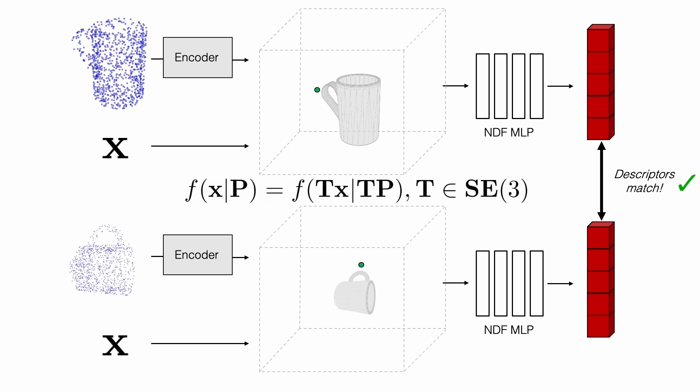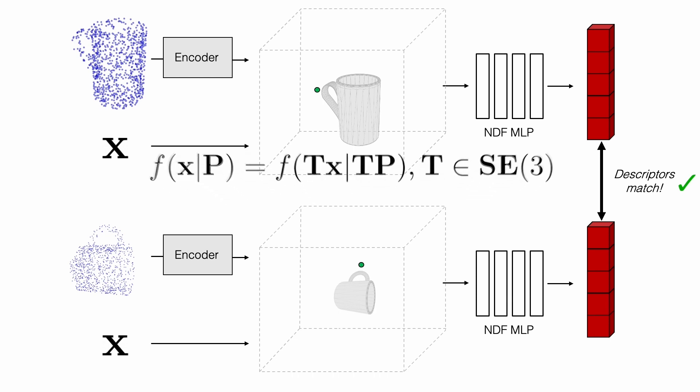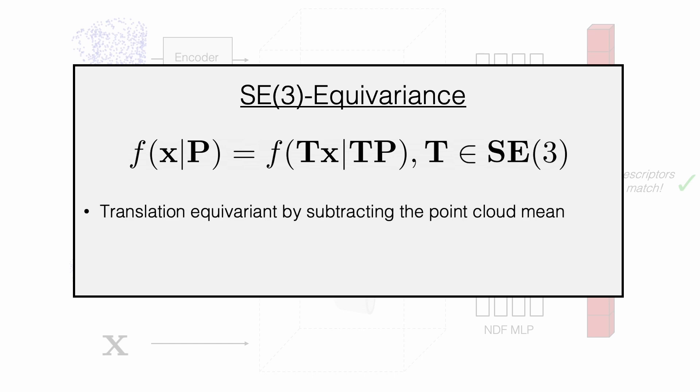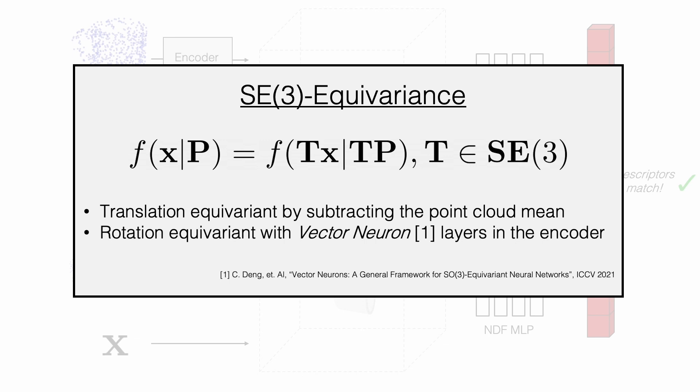In other words, we want transformations of the object to lead to a corresponding transformation of the descriptor field. Specifically, we desire for our point descriptor field to be SE3 equivariant. We can easily obtain translation equivariance by operating with mean-centered point clouds. For rotation equivariance, we incorporate the recently proposed vector neurons into our point cloud encoder. With this construction, transforming the point cloud and the input jointly leaves the descriptor unchanged.